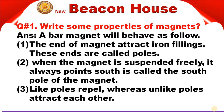Here is question number one of this chapter: write some properties of magnets. Magnets have certain properties. First is: the ends of a magnet attract iron filings. These ends are called poles. The first property is that the ends of the magnet will attract iron filings.